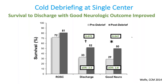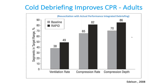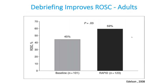There is also evidence in adults that this can help. Dean Edelson really started a lot of this work in Chicago, and they found in their program that integrated debriefings improved not only chest compression metrics, but also improved return of spontaneous circulation in their patients.